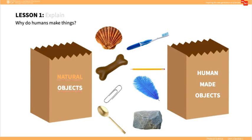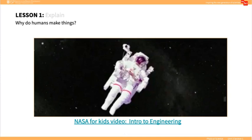Ask students if they know who made the objects and how the objects were made. Explain that a person who uses math and science to design technology that solves problems is called an engineer. Engineers use a special process to design and make those objects. Then students watch a brief, three-minute NASA video about engineers and what they do.